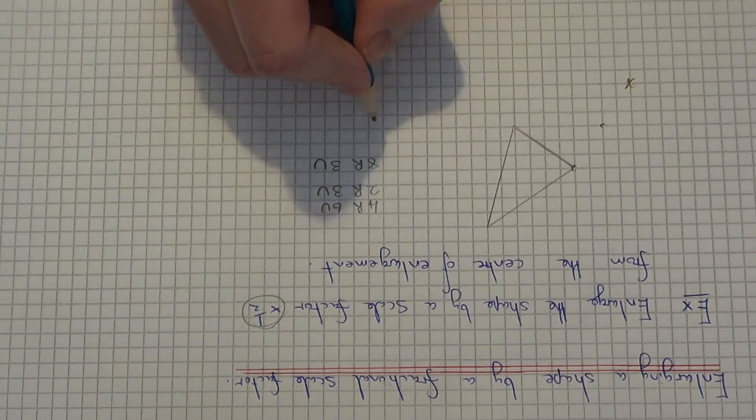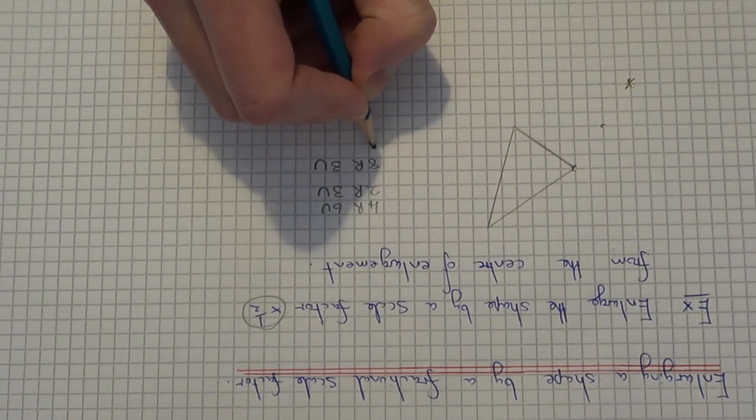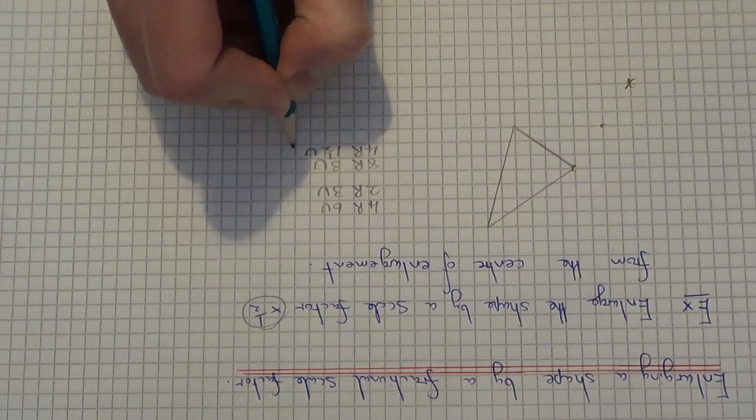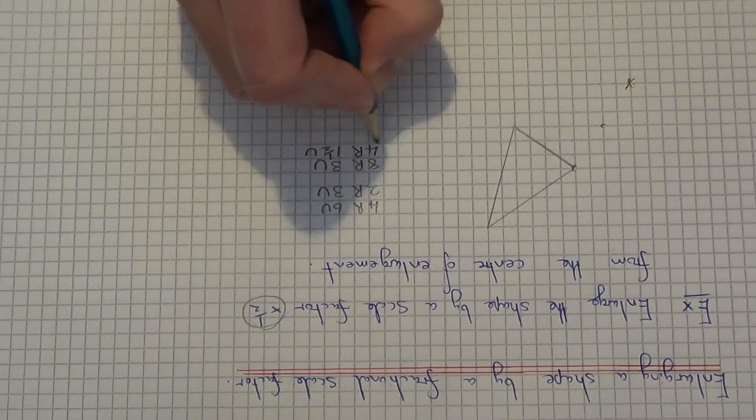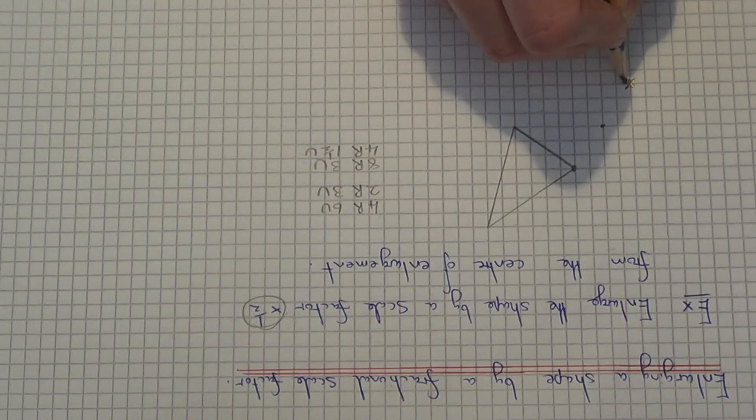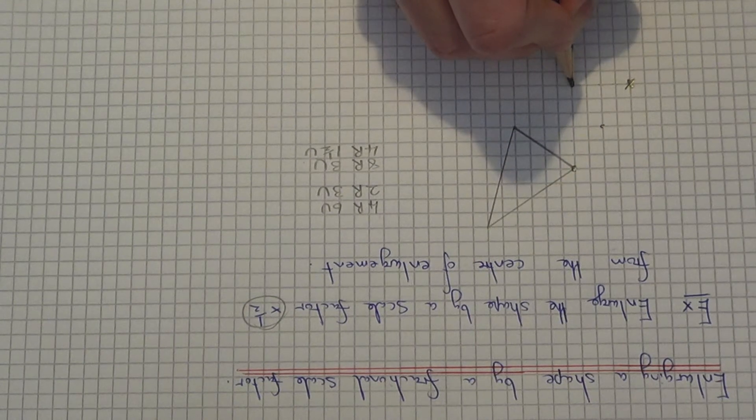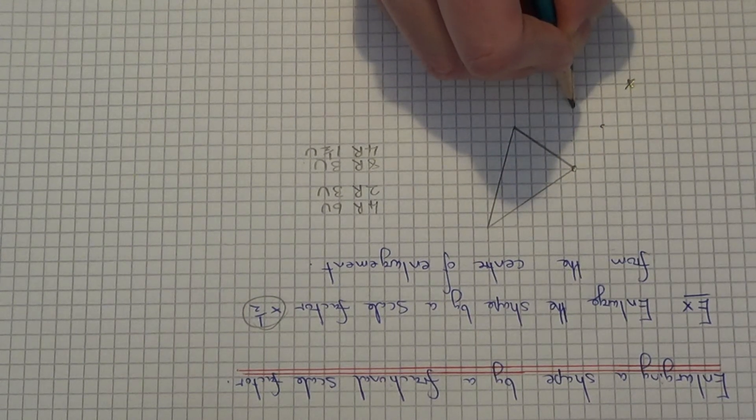So scale factor times a half, so we need to half the distances. So that would be 4 right and 1 and a half squares up. So again count this distance from the centre to mark out your new corner.